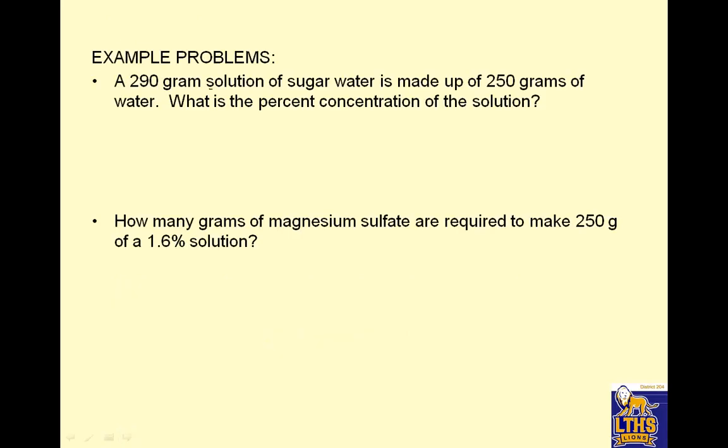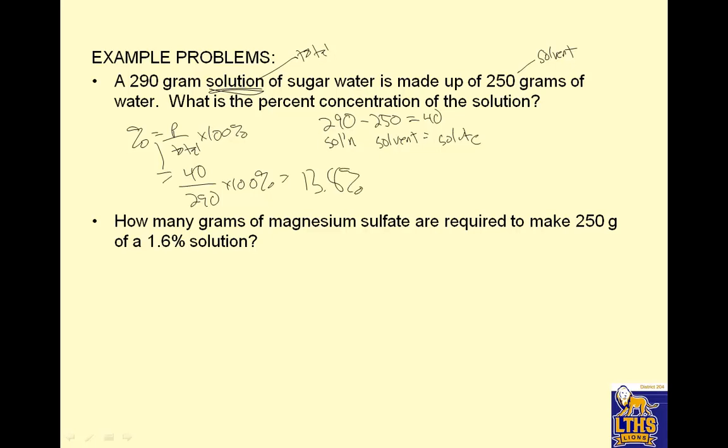Example problems. 290 gram solution of sugar water is made up of 250 grams of water. 250 grams is the bigger part, that's the solvent. So remember percent is little part, solute over total. I need to find out that little part. So 290 total minus 250 bigger part equals 40. So percent equals solute. Then percent is part over total times 100%. So my part is 40 and my total is 290 times 100%. 40 divided by 290 is 13.8% of sugar.